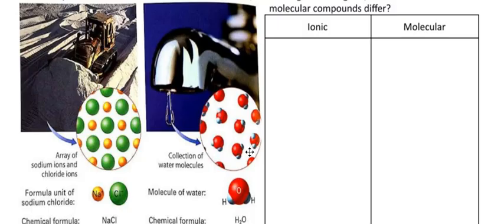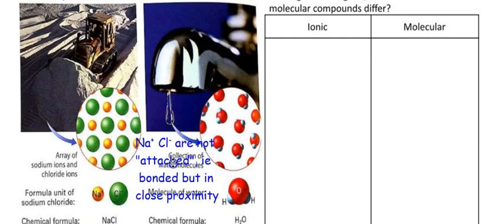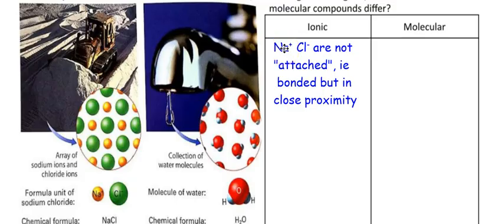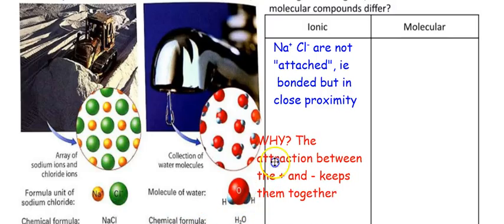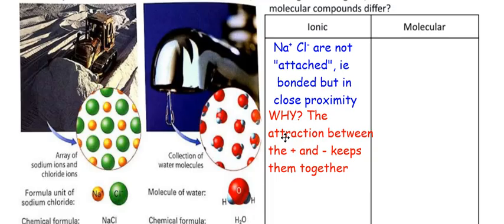How are they different? The first thing I see is that the sodium ion and the chloride ion — the cation and the anion — are not truly bonded to each other in the way we think of bonding. They're in close proximity, but the attraction between the positive and the negatives keeps the sodium and chlorines together. The ionic bond is an attraction, not a direct bond like in water.